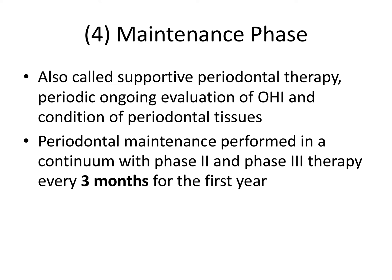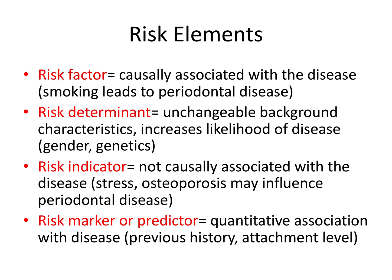Now let's talk about risk elements — these categories sound similar but are distinct terms important to distinguish for the board exam. Risk factors are those things causally associated with the disease, like smoking leading to periodontal disease. A risk determinant is some unchangeable background characteristic out of your control that increases the likelihood of disease, such as gender or genetics. A risk indicator is not causally associated with the disease but could point to higher risk, like stress or osteoporosis.